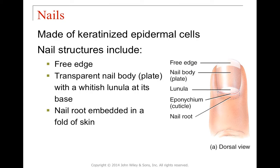Nails are also an accessory structure of the skin, made of keratinized epidermal cells just like hair but with a different orientation. Nail structures include the free edge, the transparent nail body or plate, and the lunula — the half-moon whitish region at the base, which is newly synthesized, slightly softer nail. The nail root is embedded in a fold of skin known as the cuticle or eponychium.